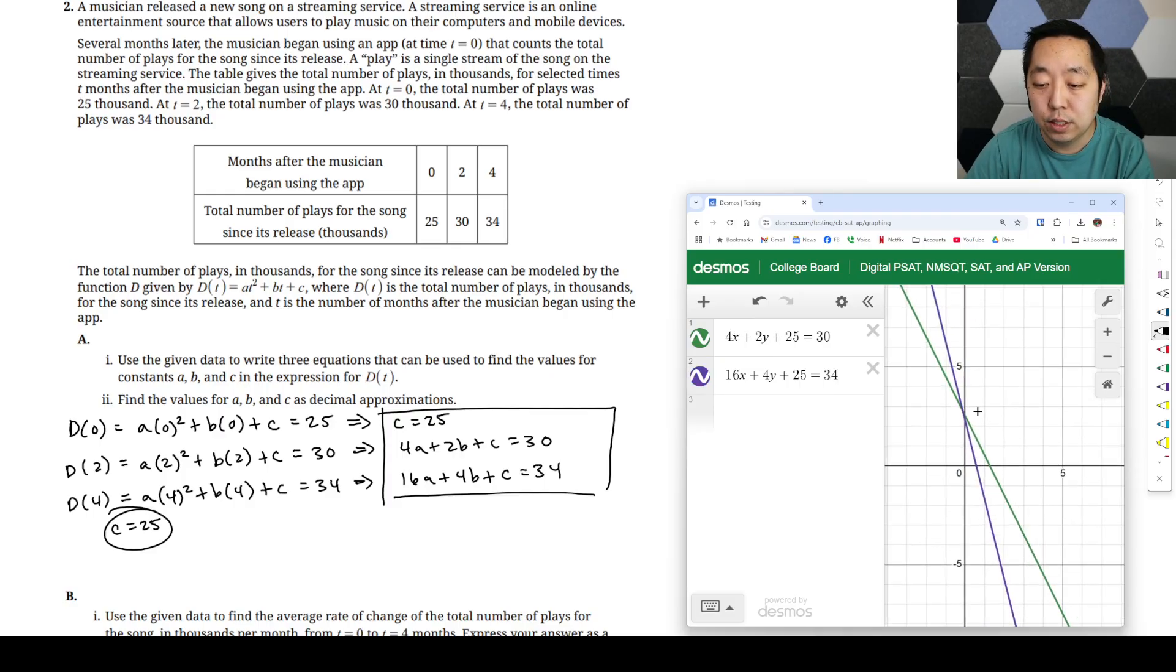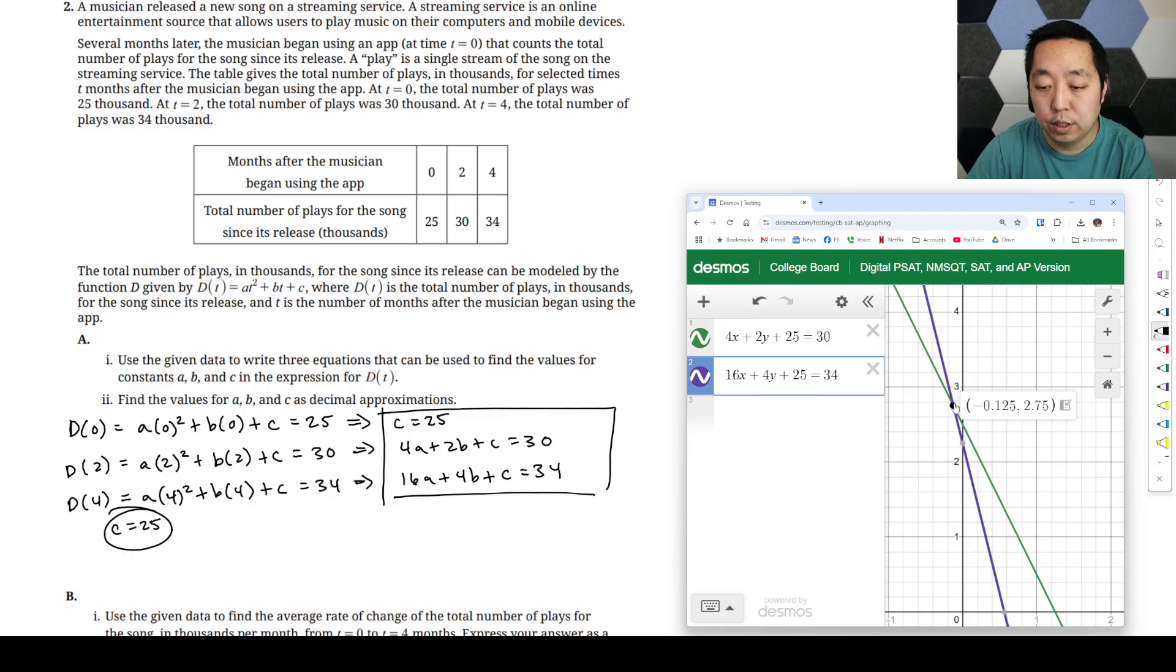And then where they intersect, you can just zoom in on the intersection there. So we get x is negative 1.25. So a would be, we replace with a, so it's negative 0.125. And then b is equal to the y value, which is 2.75. You could also do the algebra by hand, but it's a calculator question, so might as well use tools. Part of your learning here is learning how to use tools to solve things.